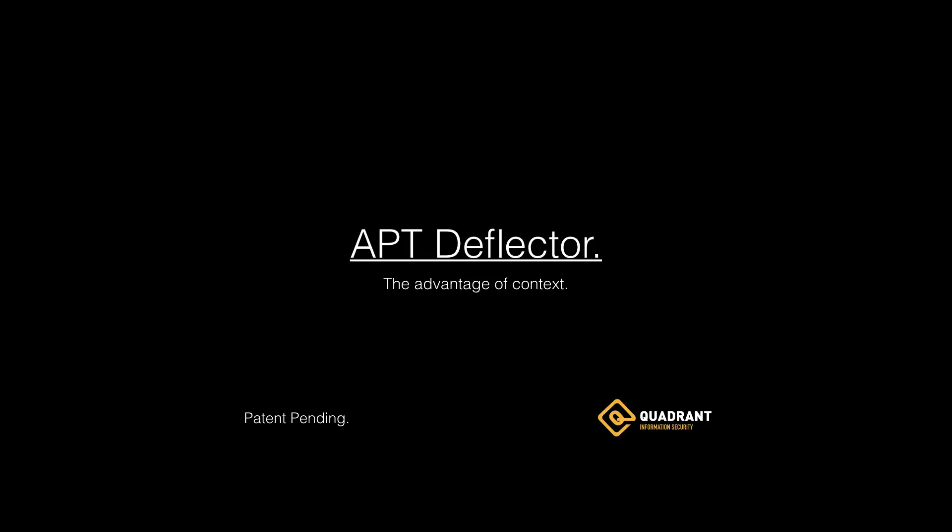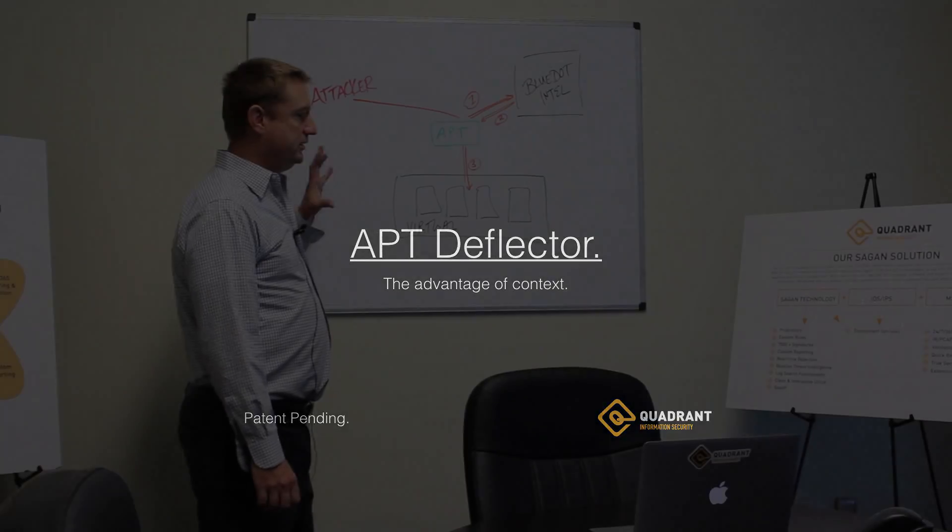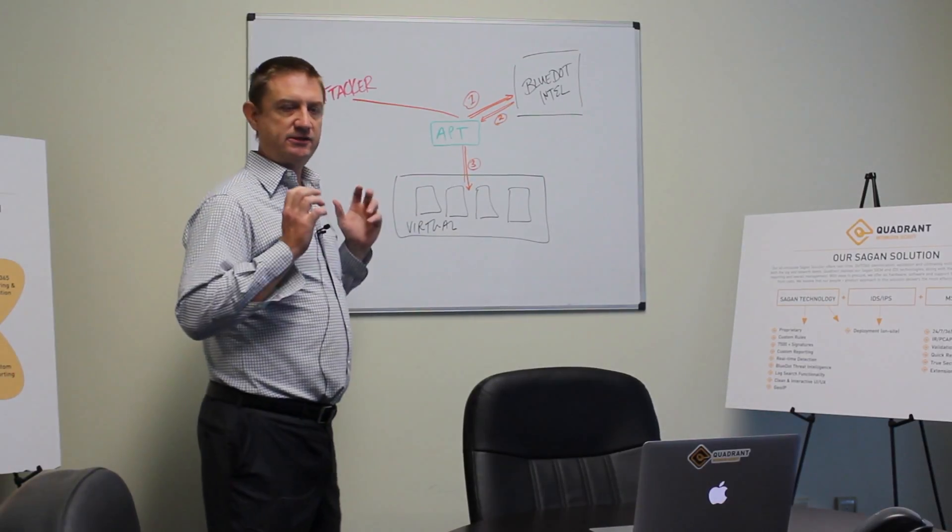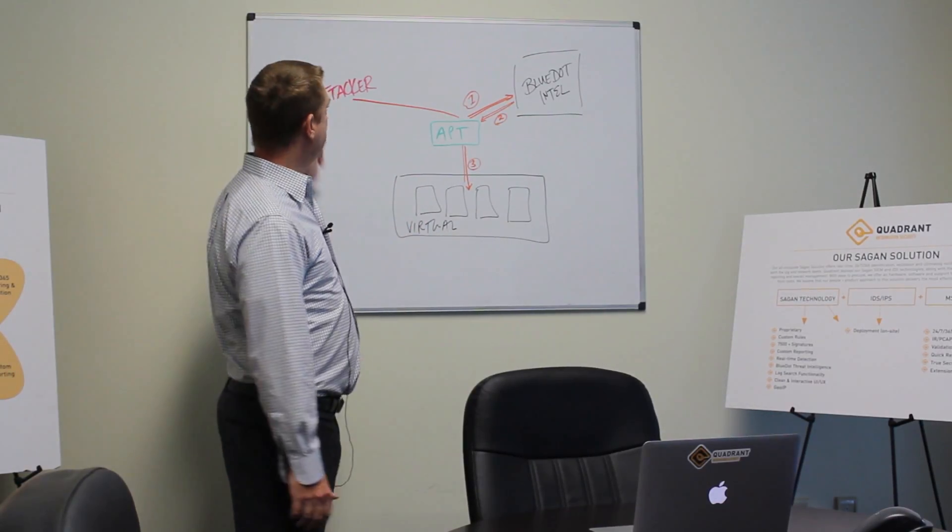So what we're trying to do with the APT deflector is we're trying to use our customer's network as context to give something the attacker will go after.